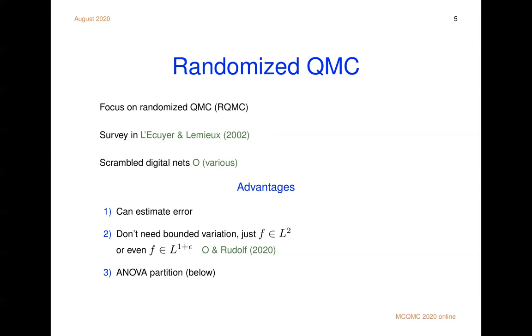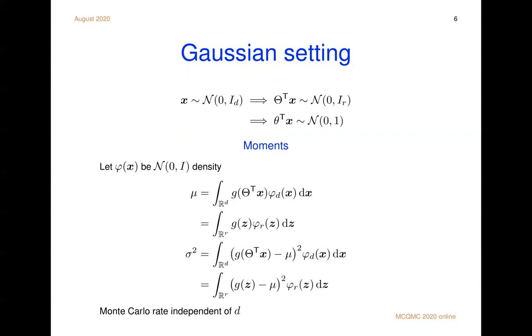Let's look in a Gaussian setting. X can be a high dimensional spherical Gaussian random variable. And then theta transpose x because theta is orthonormal. It's a low dimensional spherical Gaussian random variable. And if theta would be a vector, then it's just a scalar Gaussian. So that's a pretty nice simplification.